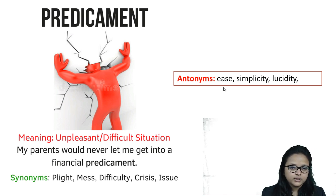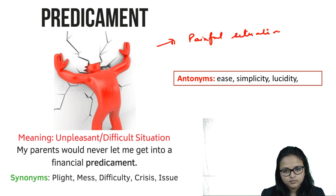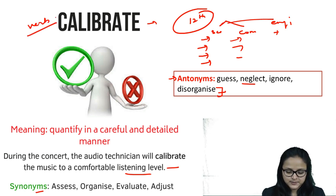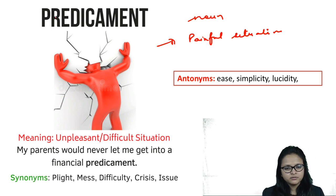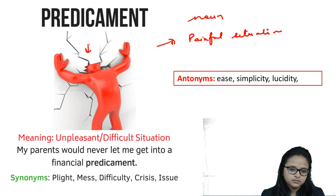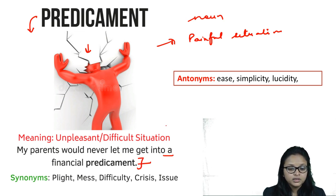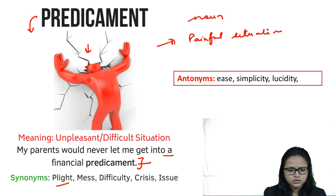The last word for today is 'predicament.' Predicament is a noun meaning a painful or difficult situation. For example, a person whose head is stuck in a wall — his situation is quite difficult and unpleasant. Example: 'My parents would never let me get into a financial predicament' — meaning they would never allow me to go into a difficult financial situation. Synonyms: plight, mess, difficulty, crisis, issue. Antonyms: ease, simplicity, lucidity — lucidity means clarity, a situation with no difficulties.